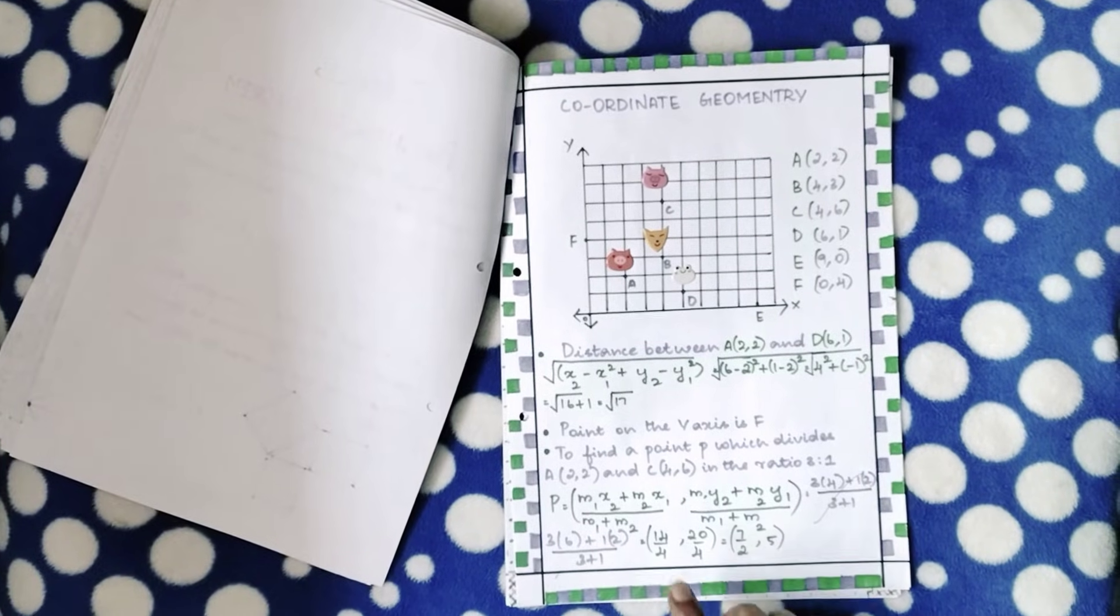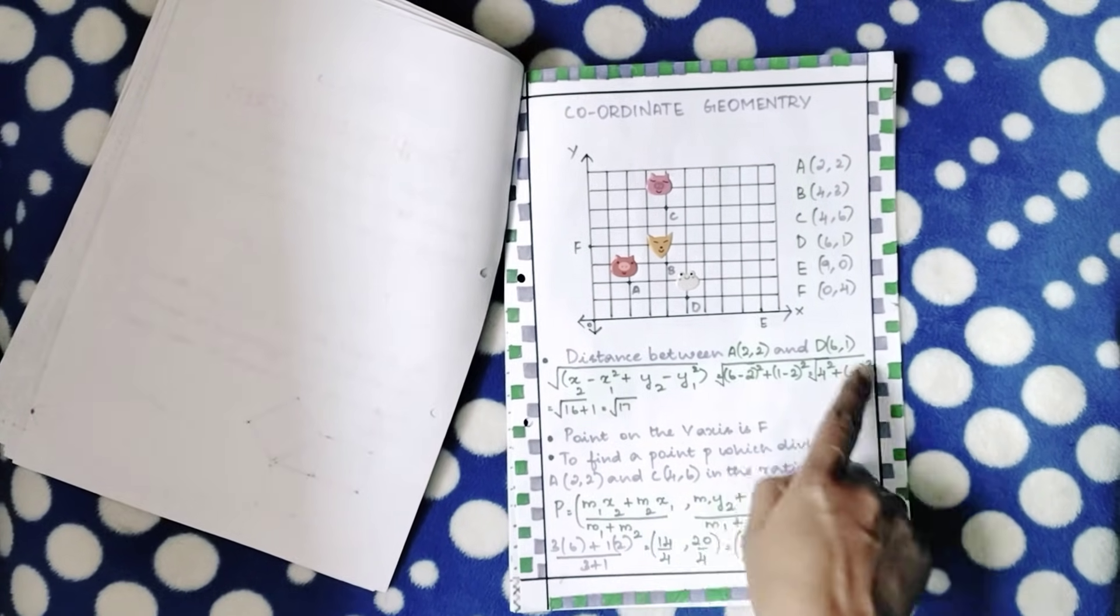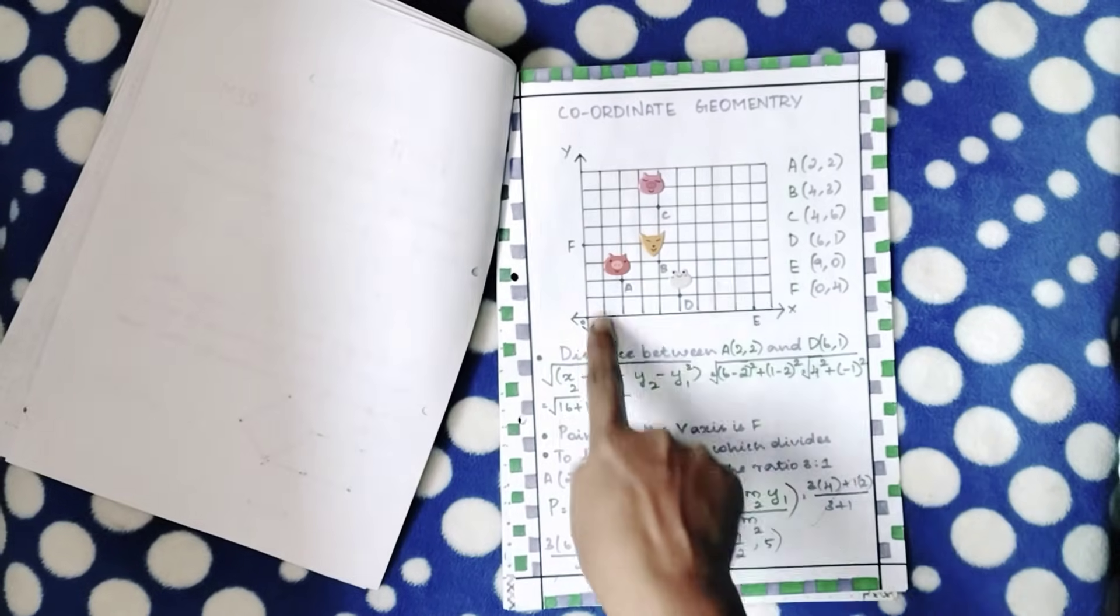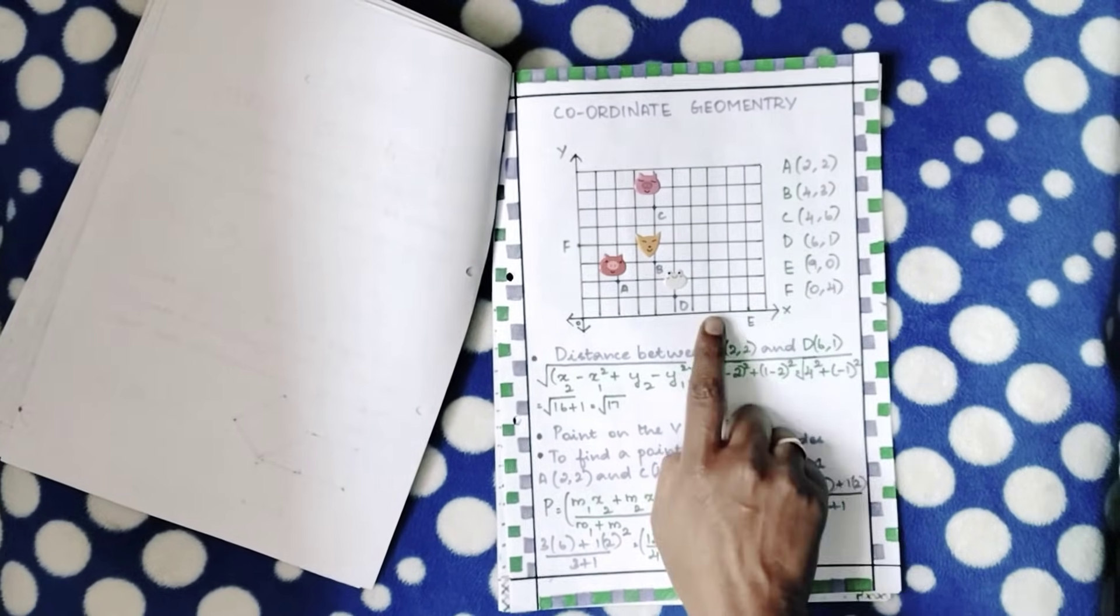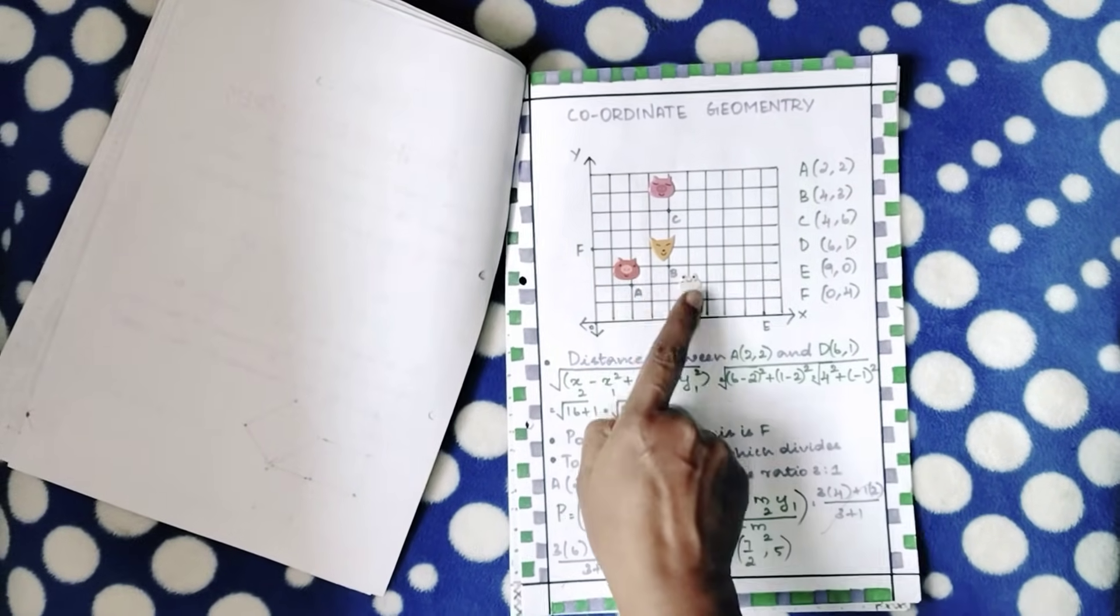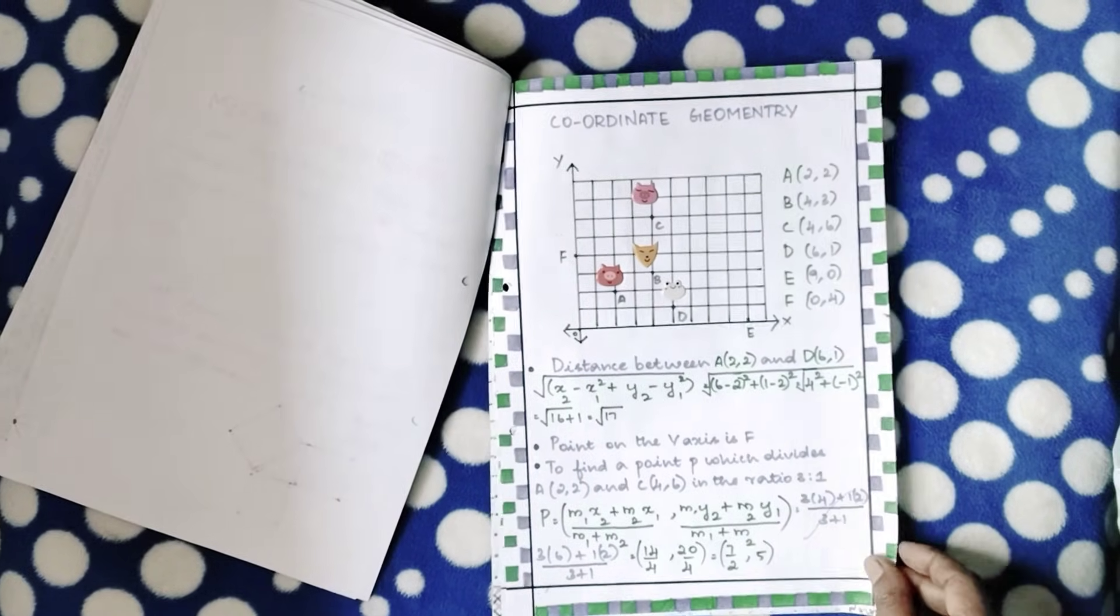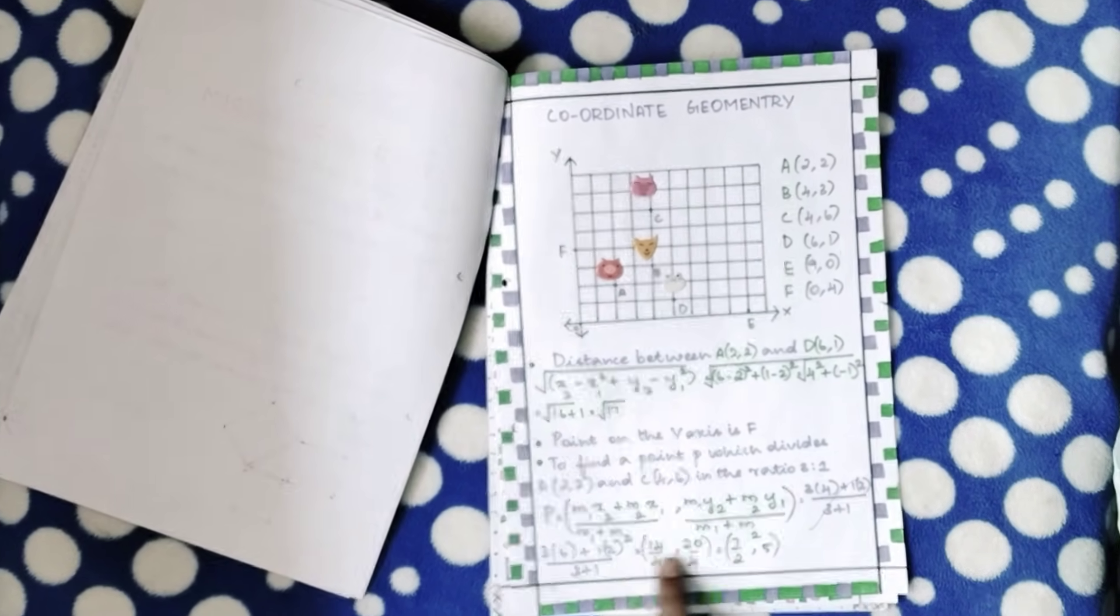The next topic is on coordinate geometry where she's found the distance between two points with a simple 2D graph. She's plotted all these points with the smiley stuck there, and she's found what's the distance, and she's also applied section formula.